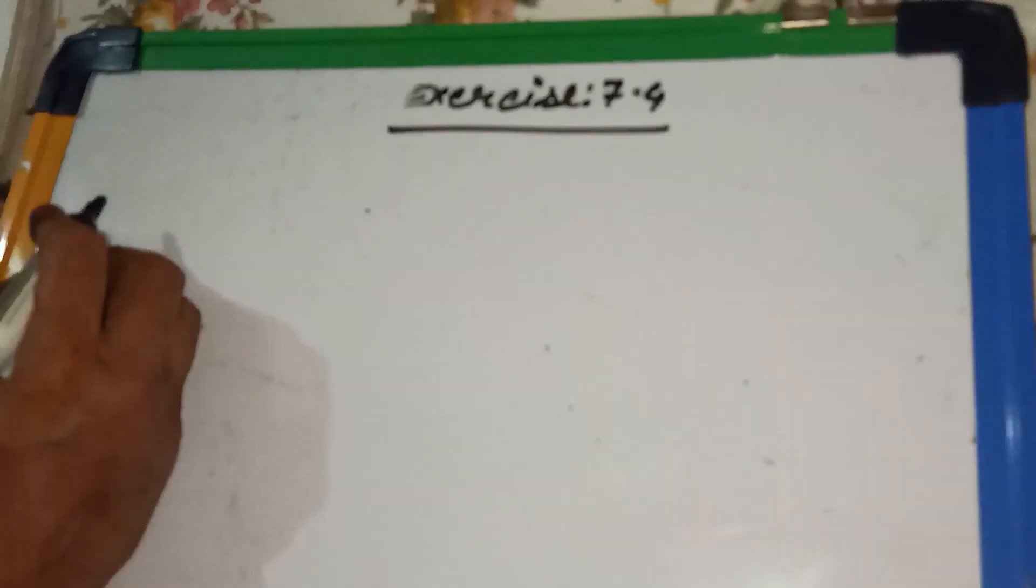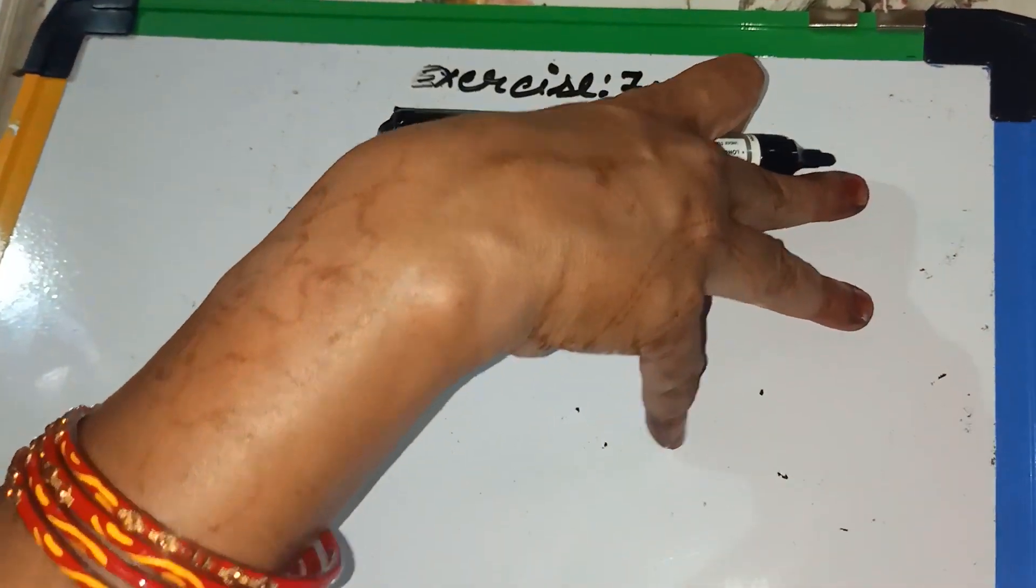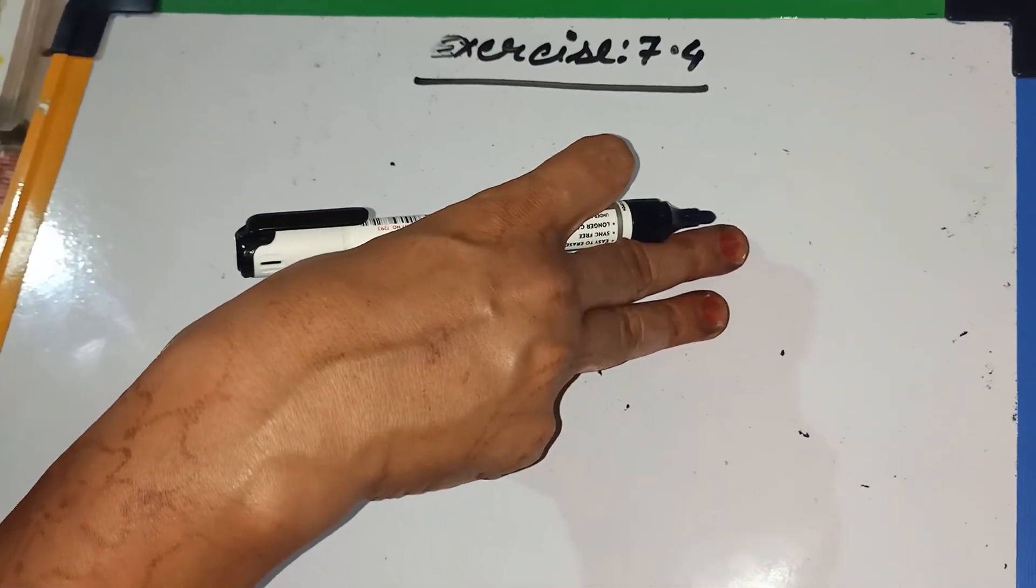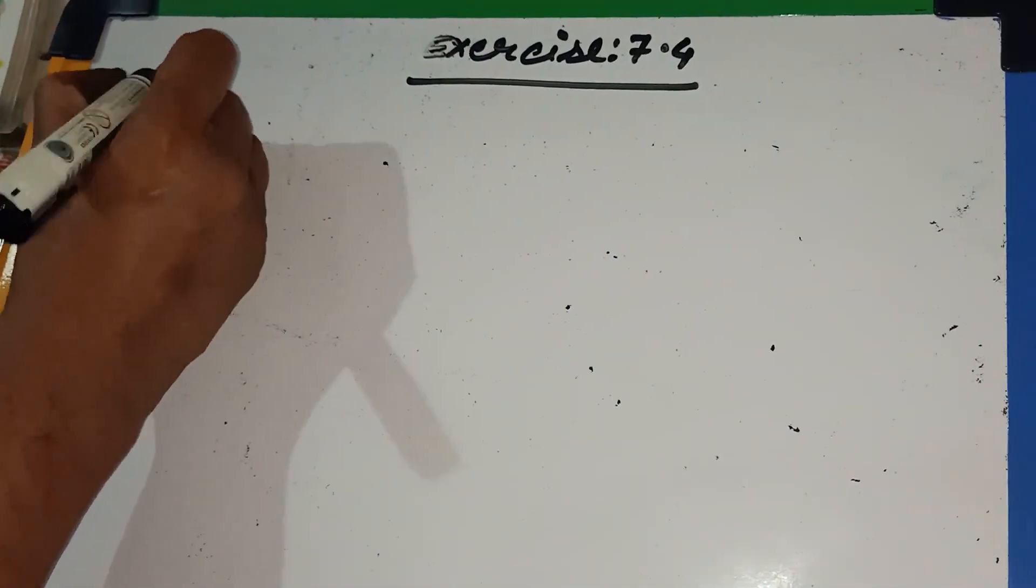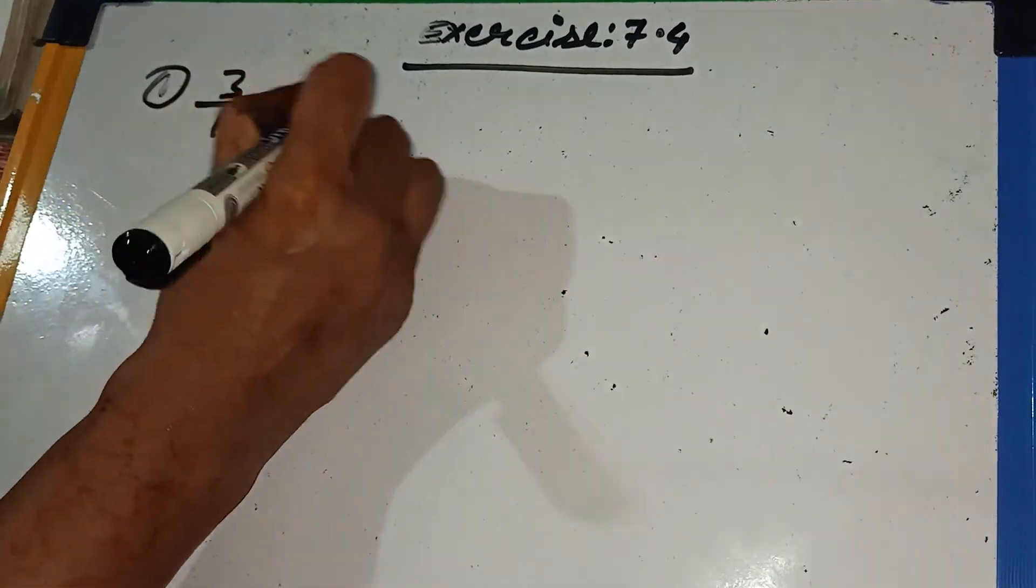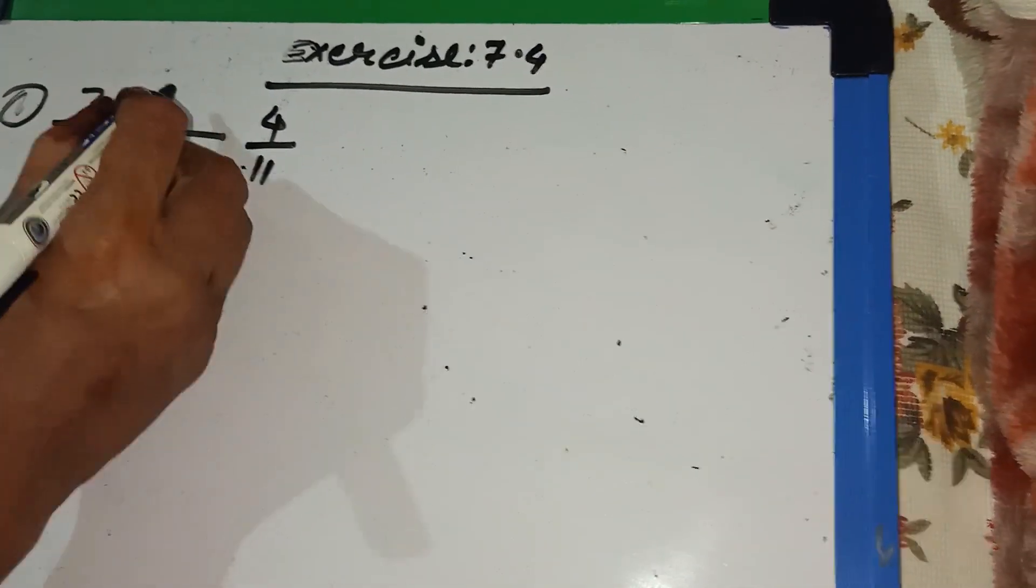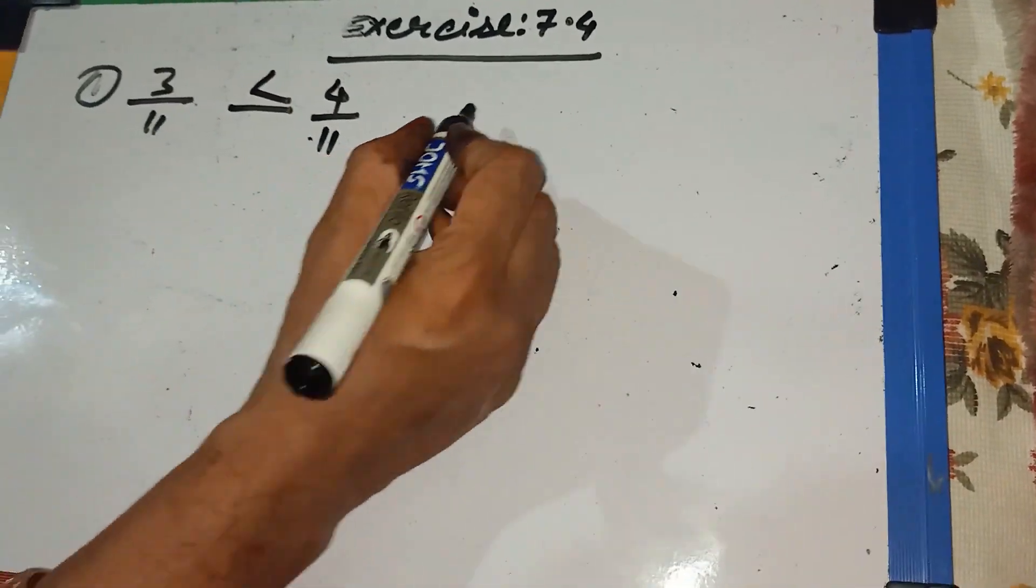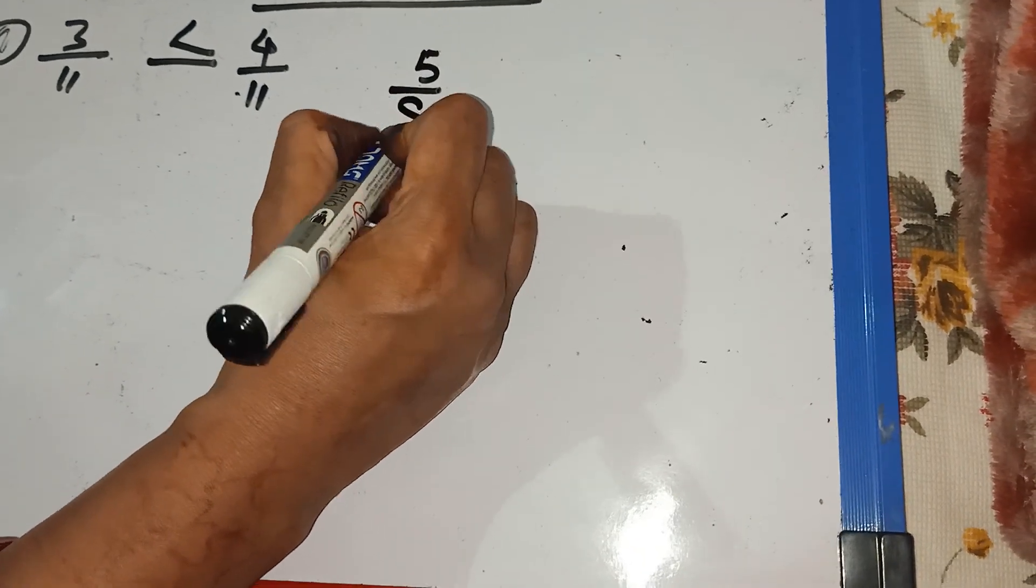So, children, by this explanation, you can do exercise 7.4 easily. Number 1, fill in the blanks by putting bigger or smaller sign. How can you do? Question number A. So, children, it is very easy. 4 by 11 is bigger than 3 by 11.